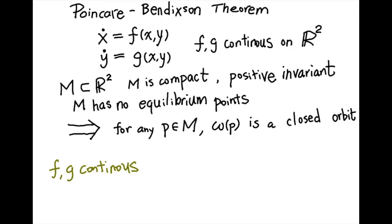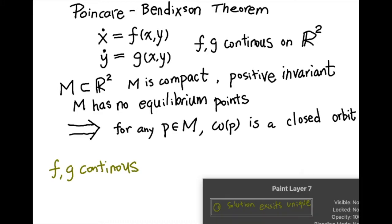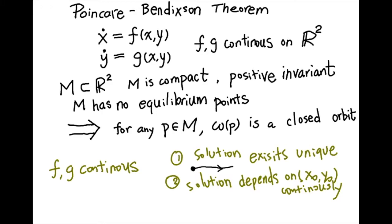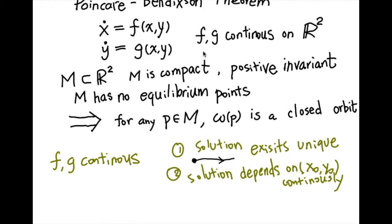Now I'll break this theorem down. First, we have the assumption that f and g are continuous on the plane. More importantly, we need the differential equations to satisfy the existence and uniqueness theorem — so f and g must be good enough that a solution exists starting at any point, the solution can flow infinitely, and two solutions never intersect. We also need solutions to depend on the initial condition continuously. In practice, the f and g functions we encounter are usually very nice.